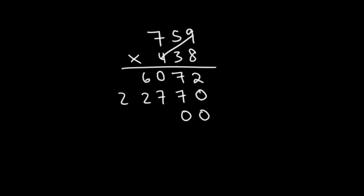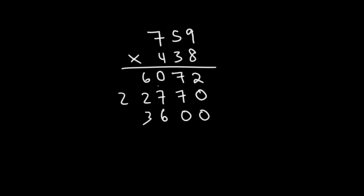So 4 times 9 is 36. Let's carry over the 3. 4 times 5 is 20 plus 3, that's 23. Let's write the 3 and then carry over the 2. 4 times 7 is 28 plus 2, that's 30. So we're just going to write 30 at this point.